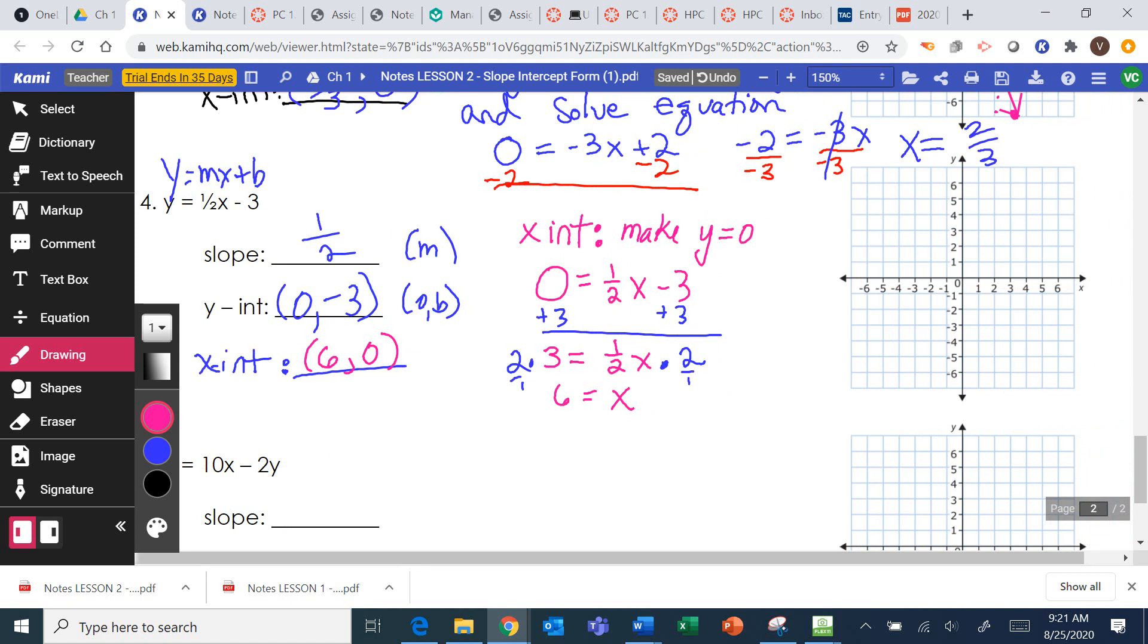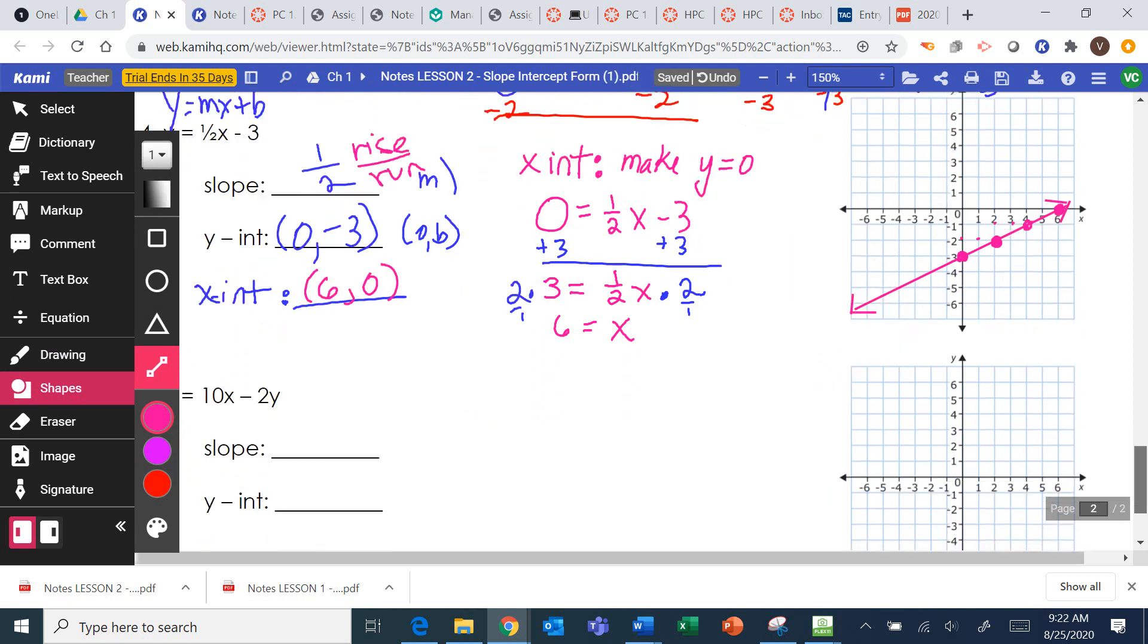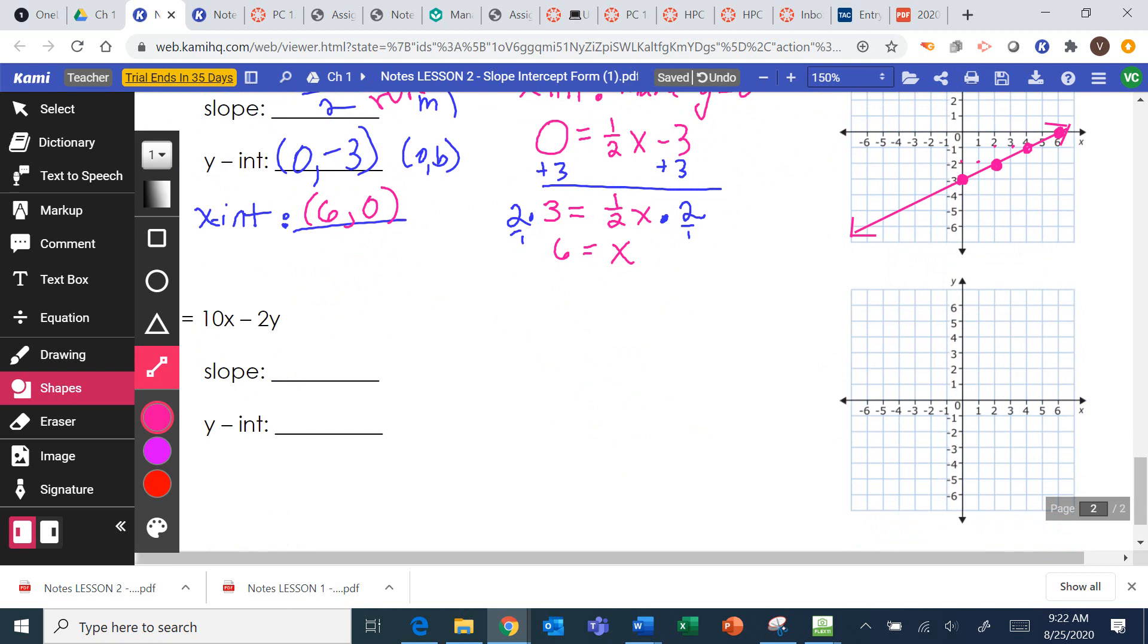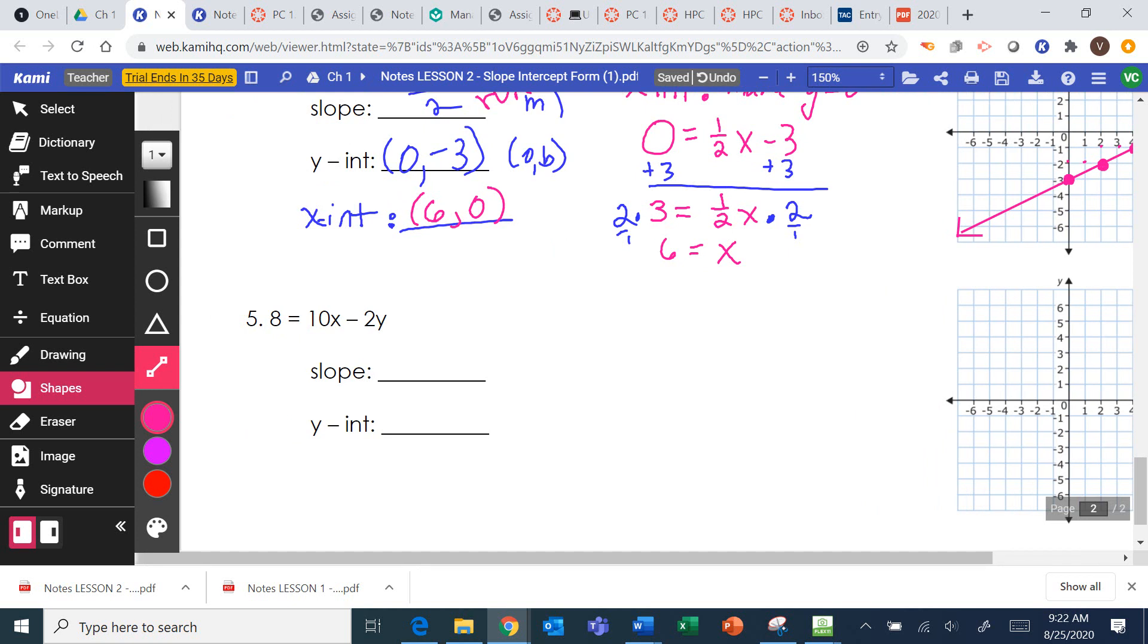So to graph it, I can graph my y-intercept at 0, negative 3. My x-intercept at 6, 0. And I can find more points using my slope. We begin at any of the points. It doesn't matter which one. And we do our rise. Do our rise, 1, run, 2. Rise, 1, run, 2. Rise, 1, run, 2. And connect. My phone's going crazy. Hope everything's okay.